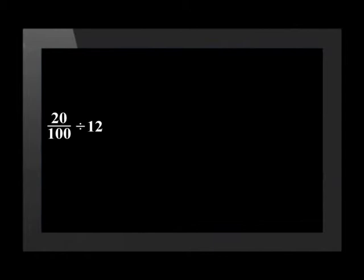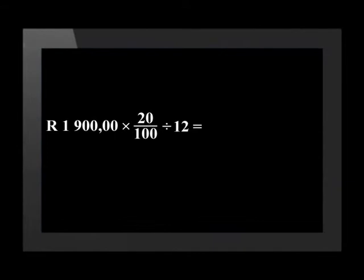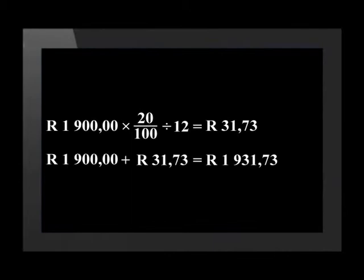Let's assume that this account charges 20% interest per annum and the interest is added at the end of each month. The interest rate per month will be equal to 20/100 divided by 12. We need to multiply the amount owing by this to calculate the amount of interest charged for the first month: 1,900 Rand × (20/100 ÷ 12) gives an amount of R31.73. This means that the total amount owing at the end of the first month is R1,931.73. Every month, a credit card holder will be expected to pay off a portion of their debt. If they do not make the minimum payment as stated on their statement, more interest will be added to their account.